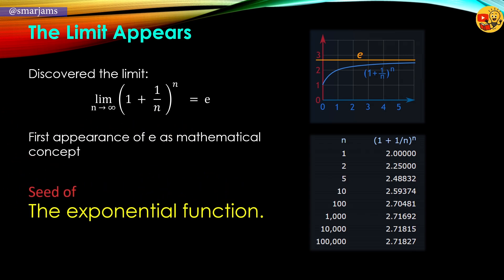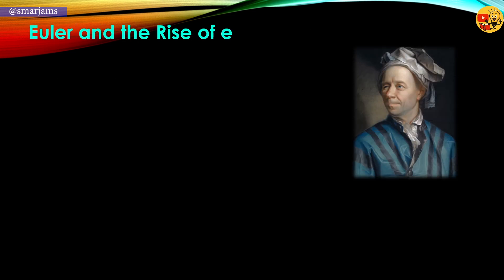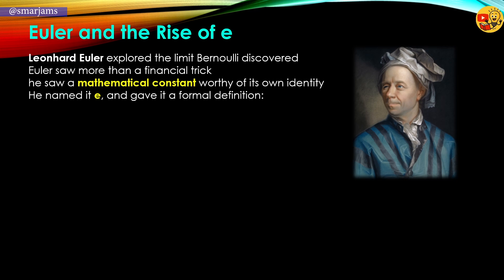What Bernoulli found was only the beginning. His result planted the seed of what would become the exponential function. He didn't yet grasp the full structure, but his work hinted at a pattern that would later revolutionize calculus and model nature's behavior. In the early 1700s, the Swiss genius Leonhard Euler picked up where Bernoulli left off. He recognized the pattern wasn't just financial — it was universal. Euler gave the number a name: e.